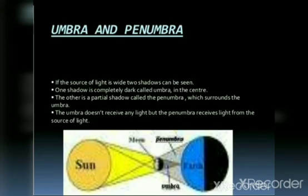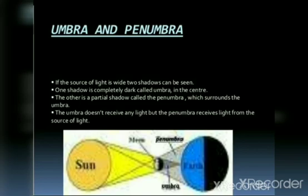Before starting the partial and total eclipse, we will discuss about umbra and penumbra region. If the source of light is wide, two shadows can be seen. One shadow is completely dark, called umbra, in the center. The other is a partial shadow called the penumbra, which surrounds the umbra. The umbra doesn't receive any light, but the penumbra receives light from the source of light. On the basis of these two regions, umbra and penumbra, the eclipses are further divided into two types: total eclipse and partial eclipse.